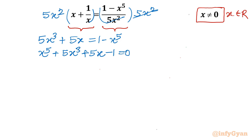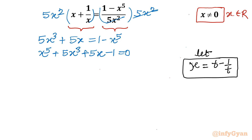Now I will give a special substitution. Why is it called special? Because the substitution is hyperbolic. I will put x equal to t minus 1 over t. This is our substitution. Let us substitute over here.